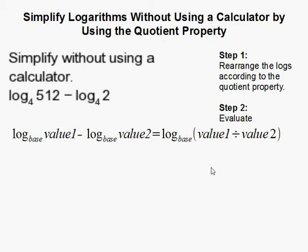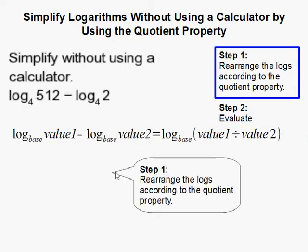How to simplify logarithms without using a calculator by using the quotient property. The first thing we need to do is rearrange the logs that we're given in this expression according to the quotient property. You don't always have to do it, but sometimes it does make it easier.